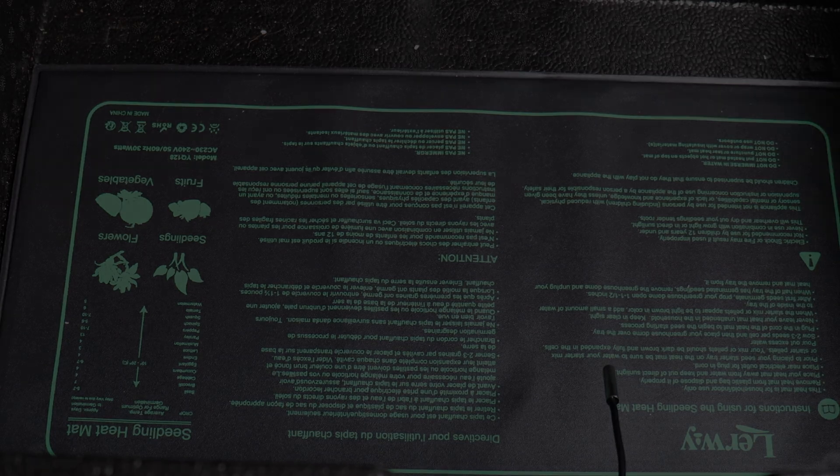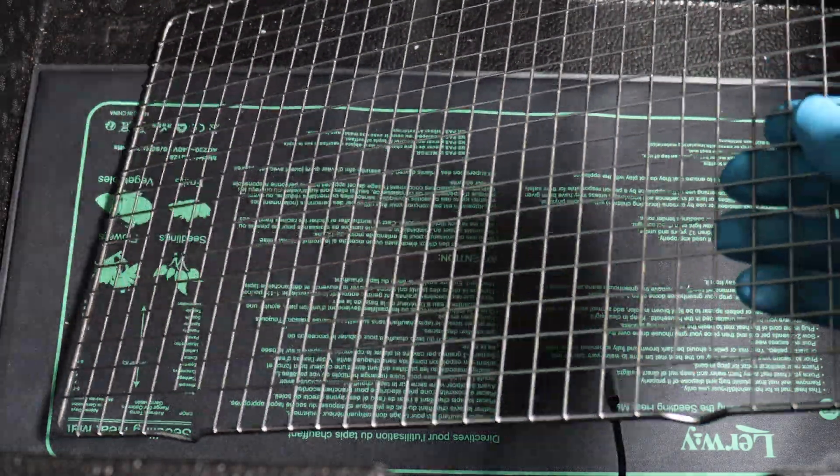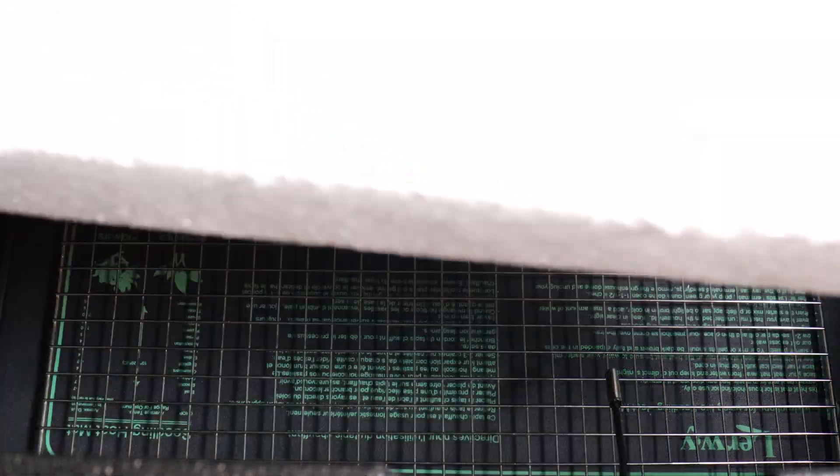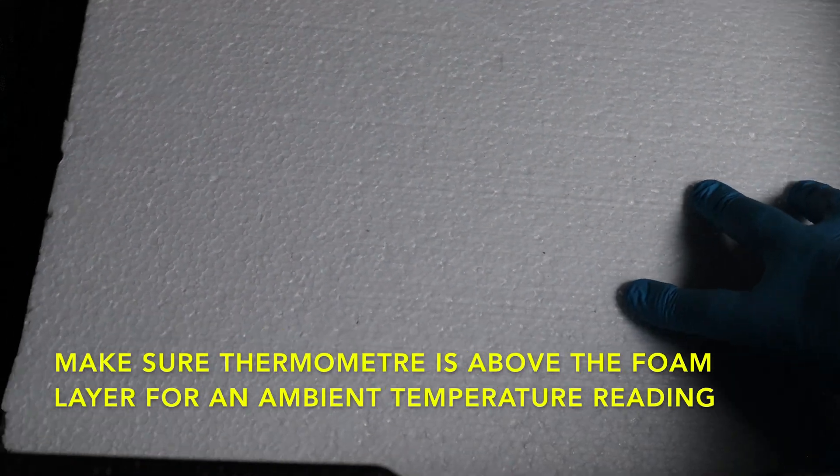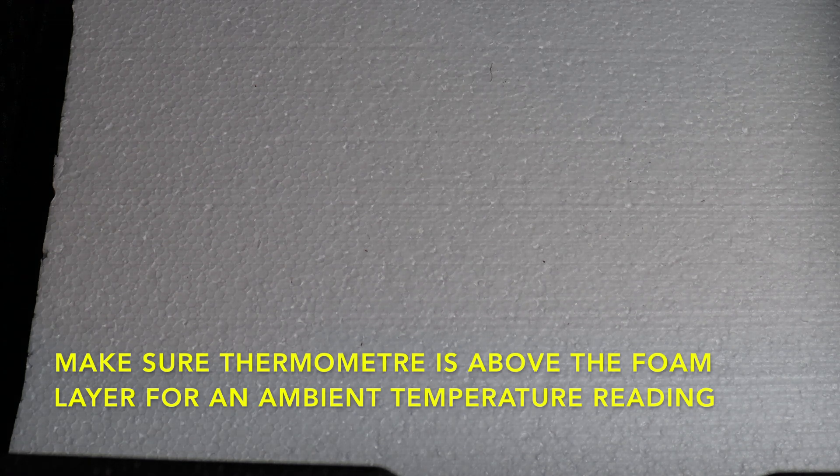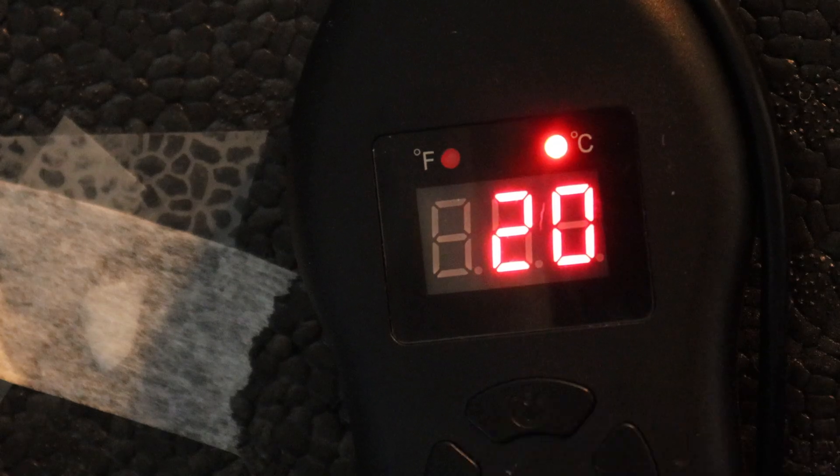Now on top of the heating mat, we place our trivet or rack, and then on top of that we place a big piece of foam. This is going to stop the spawn from drying out as well as not sandwiching the heating mat between two insulating layers. Very important.